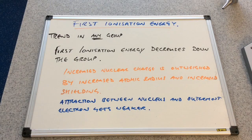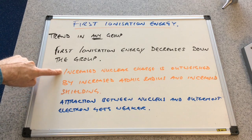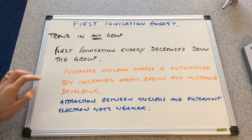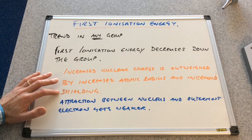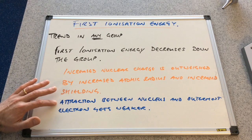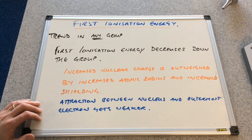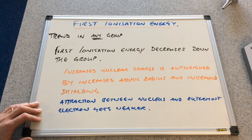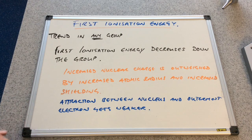So the overall trend in any group: first ionisation energy decreases down any group. Why? The increased nuclear charge is outweighed by the increased atomic radius and the increased shielding. Because of these two factors, the attraction between the nucleus and the outermost electron gets weaker. So less energy is needed to remove the outermost electron, and the process becomes less endothermic.